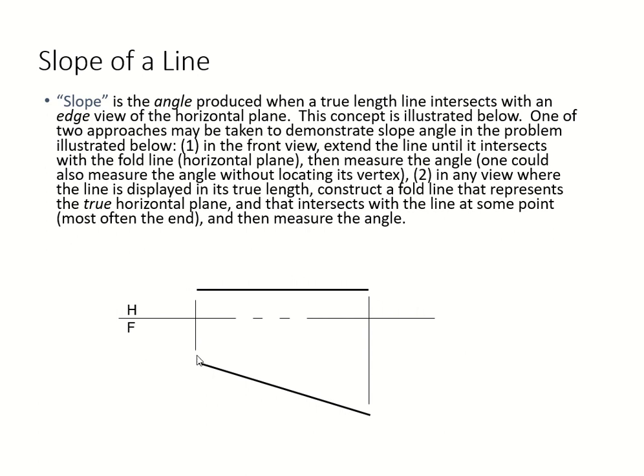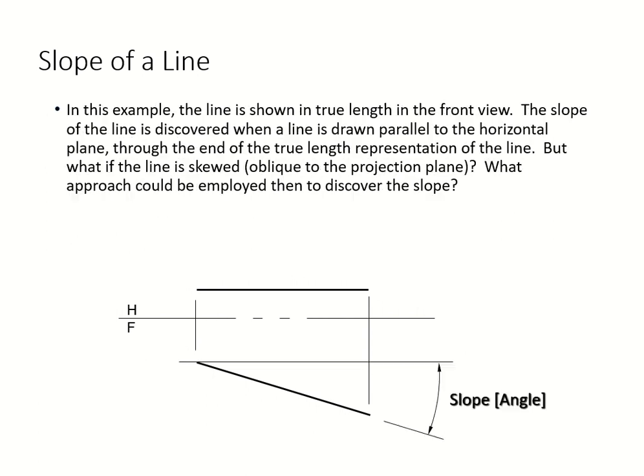Then we're gonna draw - look at this line - that line is parallel to your fold line. So we're drawing parallel to the fold line in our front view, and we keep this. Look at this point - starting from that part all the way there, your projectors are right here from point to point, and that's your slope angle.